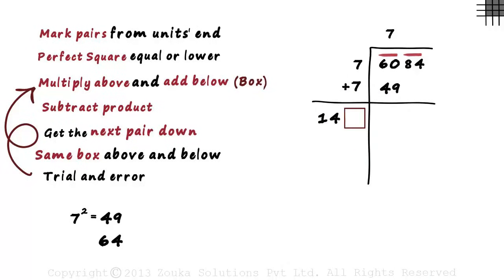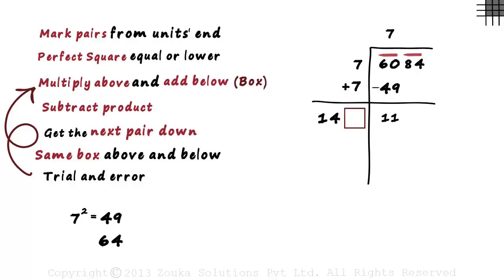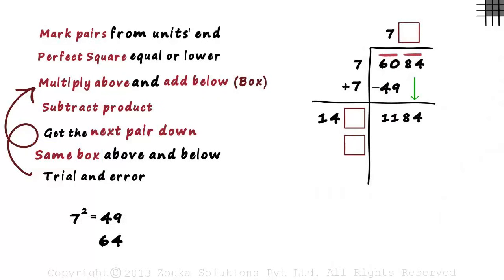Next, we follow out three simple steps. Subtract product. 60 minus 49 gives us 11. Then we get the next pair which is 84 down. Then we draw the same box above and below. And at last, we reach our favorite step. Finding the digit in these boxes by trial and error.